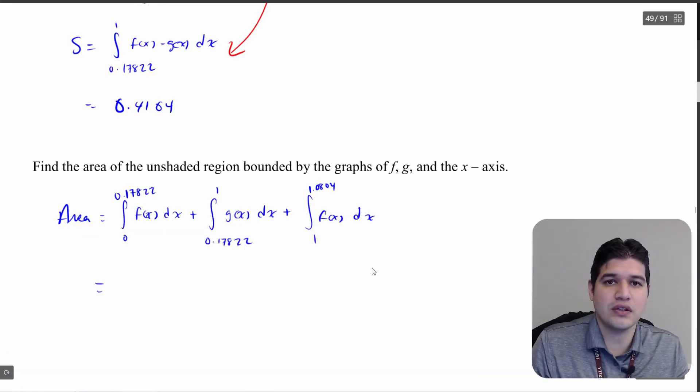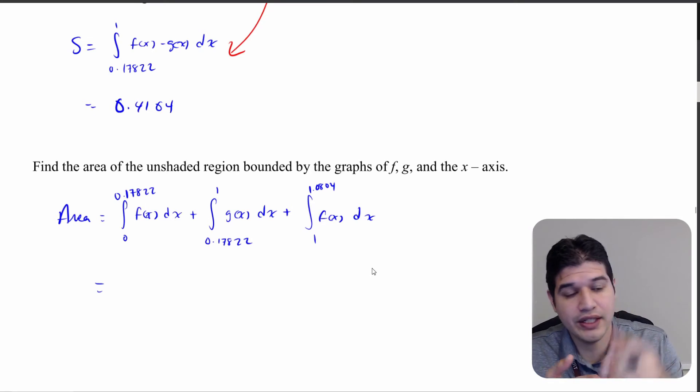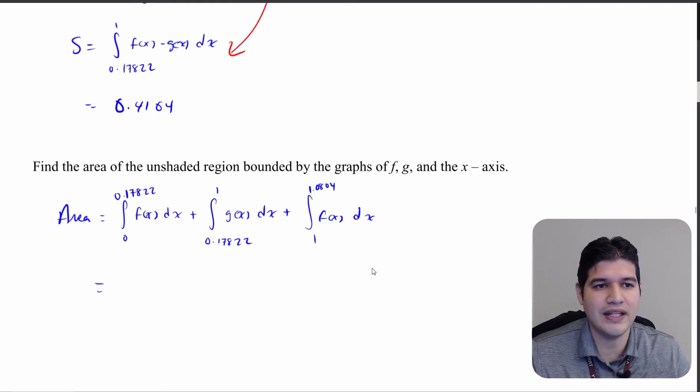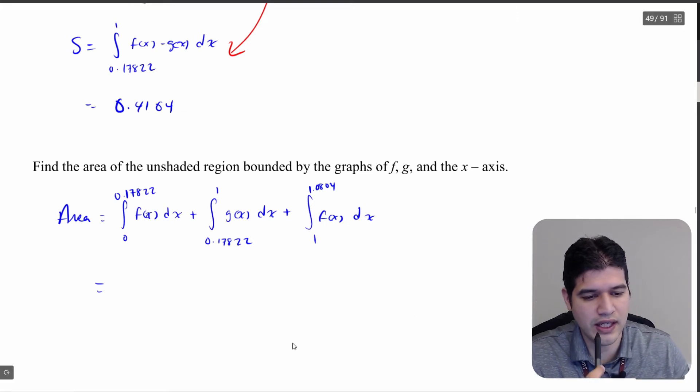So again, this is a calculator question. You're going to type everything here into the calculator. And remember, f of x is f1 and g of x is f2. So there are little notations and ways you can make this easily calculated on the calculator. So let's go ahead and do that.